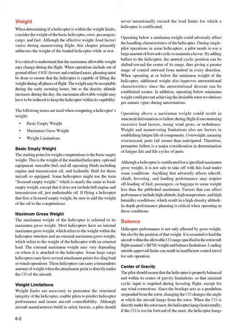Operating below a minimum weight could adversely affect the handling characteristics of the helicopter. During single pilot operations in some helicopters, a pilot needs to use a large amount of forward cyclic to maintain a hover. By adding ballast to the helicopter, the neutral cyclic position can be shifted toward the center of its range, giving a greater range of control outward from neutral in every direction. When operating at or below the minimum weight, additional weight also improves autorotational characteristics since the autorotational descent can be established sooner. In addition, operating below minimum weight could prevent achieving the desirable rotor RPM during autorotations.